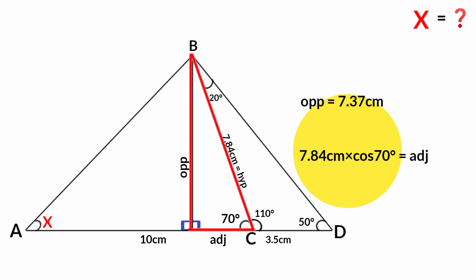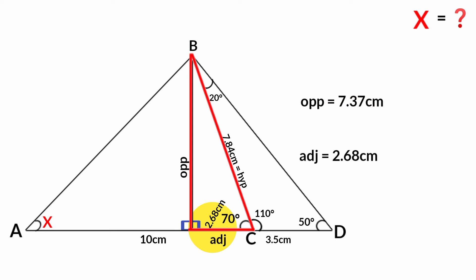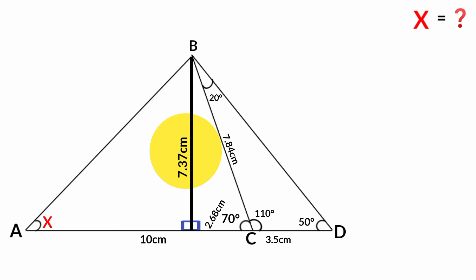The adjacent is 2.68 centimeters, and the opposite is 7.37 centimeters. Now, since the whole length of line AC is 10 centimeters and this segment is 2.68 centimeters...